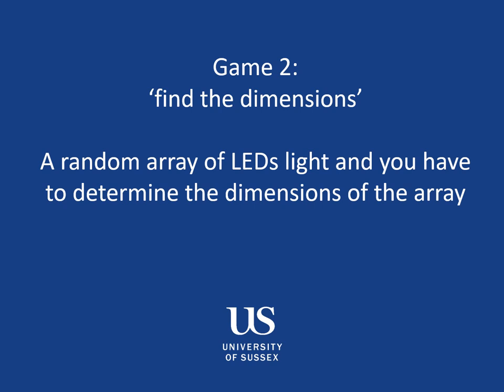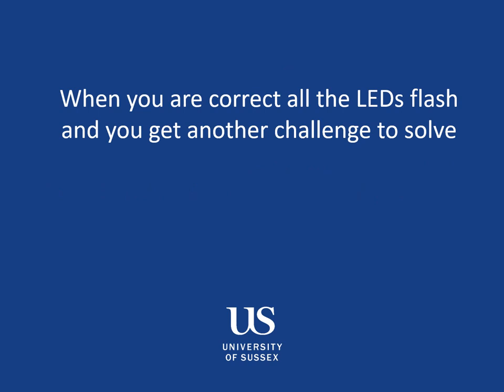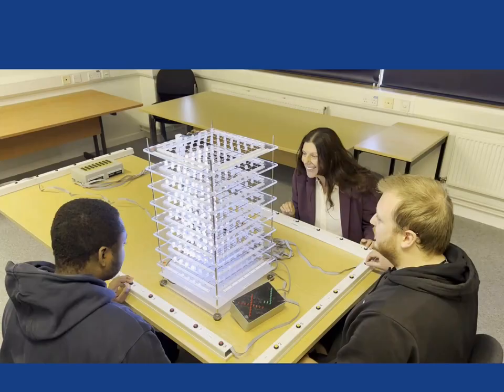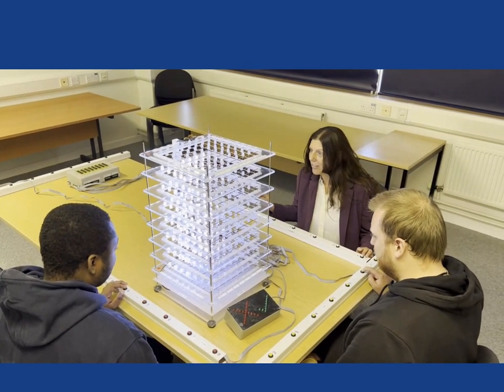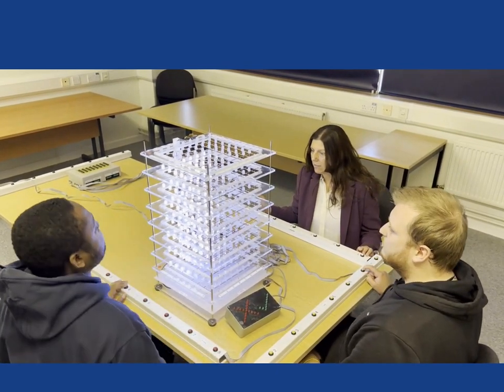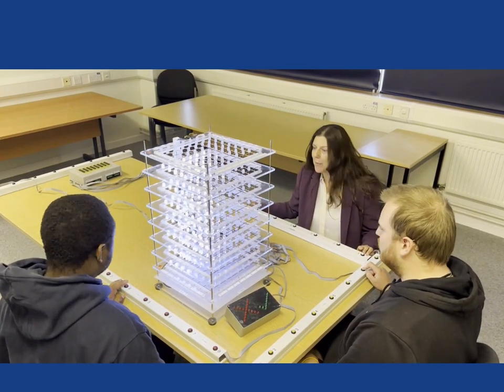So in game two the object of the game is to find the dimensions. So the game will randomly create an array of LEDs and the participants have to determine the dimensions of the array. When they're correct the LEDs will flash and you'll get another challenge to solve. So let's see it in action. So the game's generated an array of LEDs. They've got to put in the right dimensions.